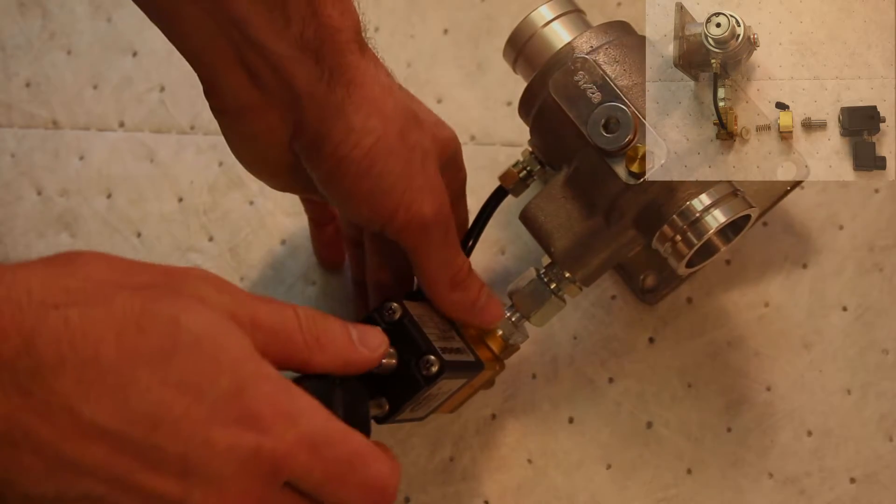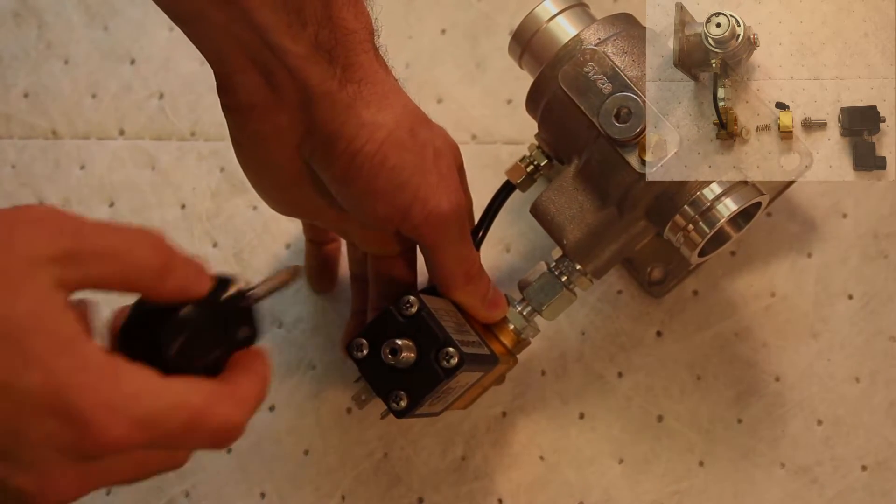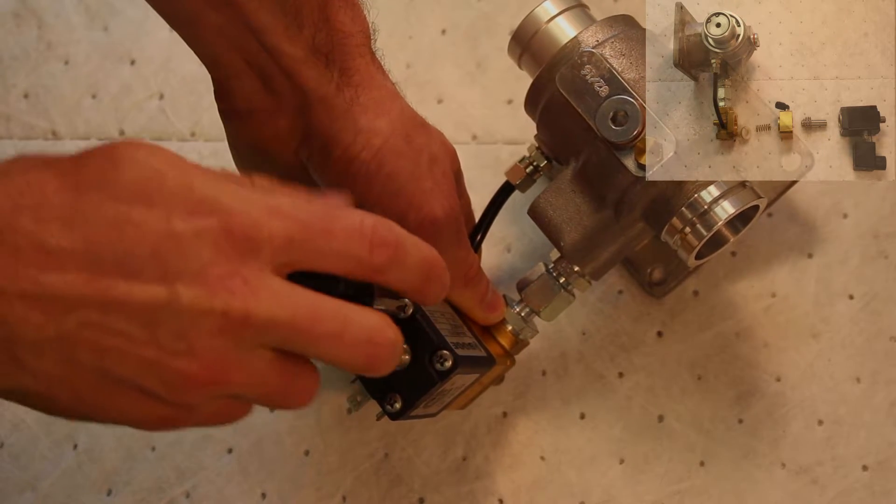Next, loosen and remove the four bolts located on top of the solenoid valve. Once the bolts are loose, remove them from the solenoid valve.